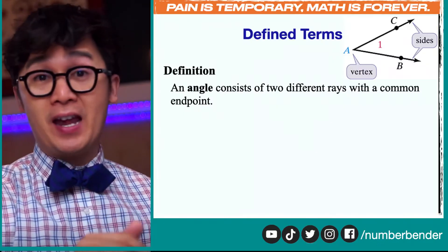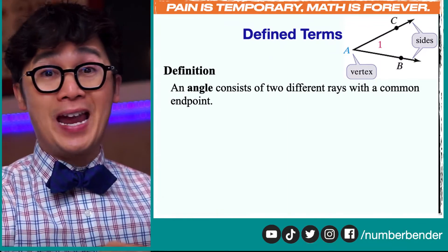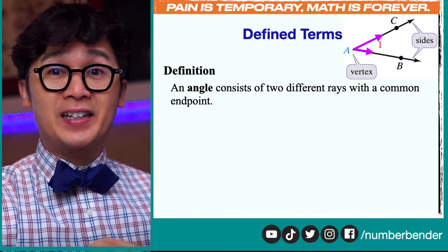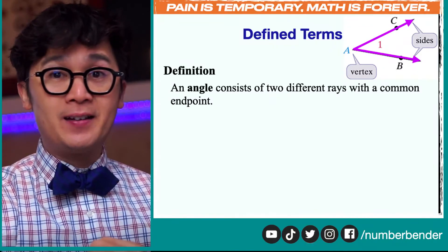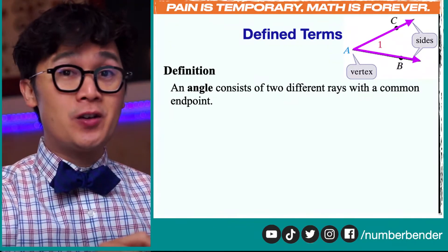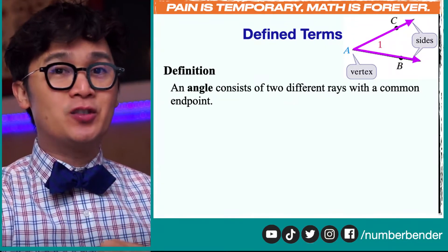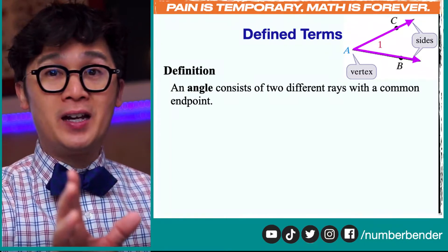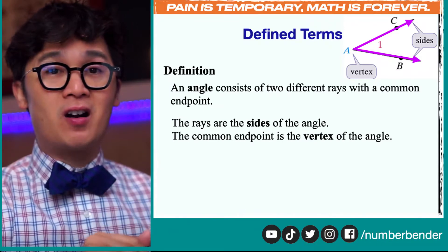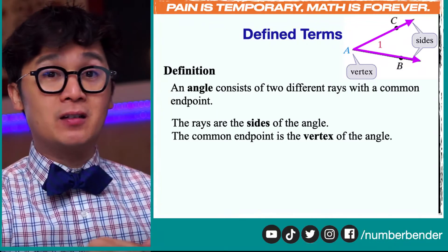So by definition, an angle consists of two different rays with a common endpoint, and you are looking at an example of an angle in geometry. These two rays have a common intersection, or common point, that we call the vertex in geometry. So we have sides and we have a vertex in an angle, and these are the parts of an angle that we need to remember.